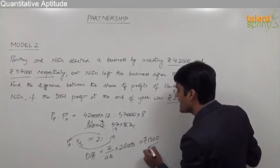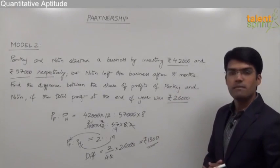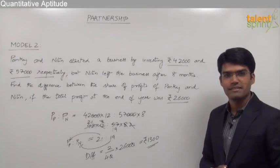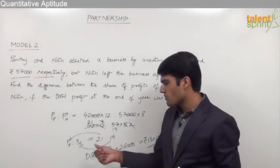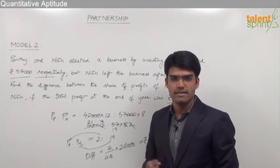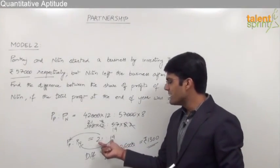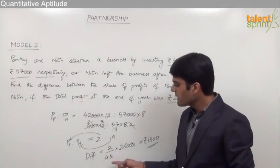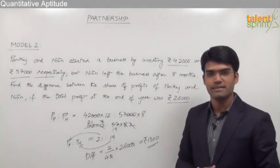The difference of profits between Pankaj and Nitin is 1,300 rupees. Whenever we need to find the difference, we need not calculate individual profits — simply take the difference between the number of parts divided by total number of parts, then multiply by the total profit.